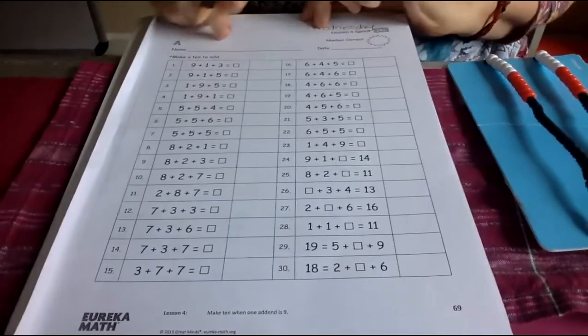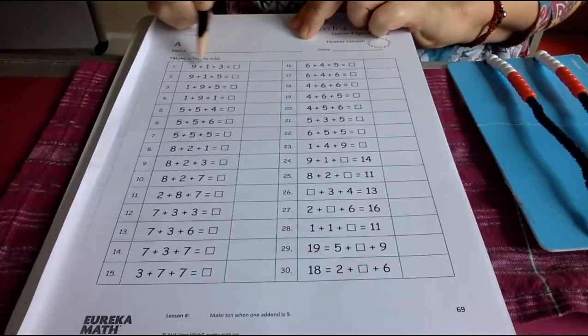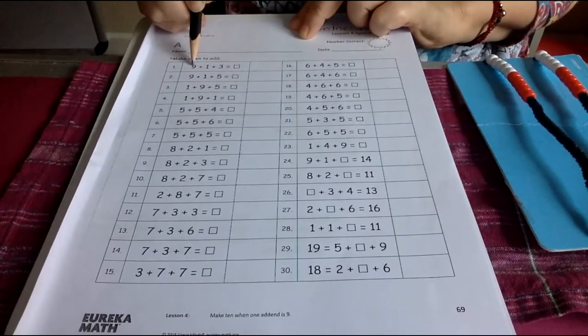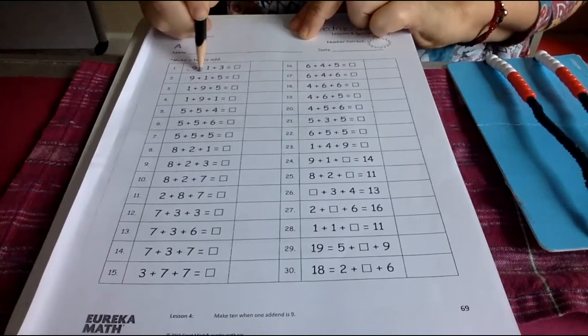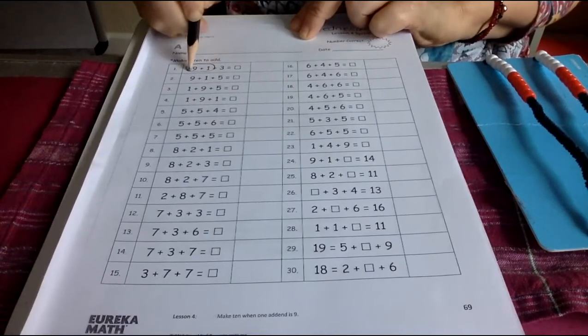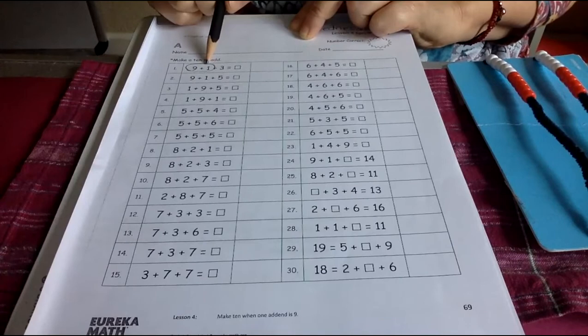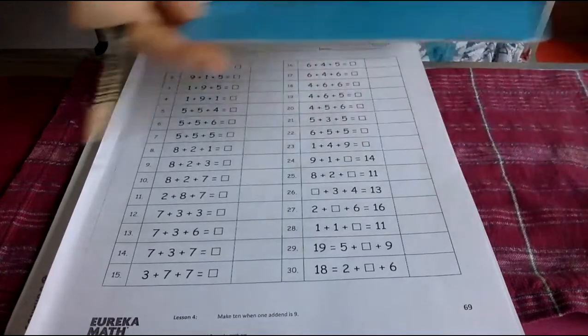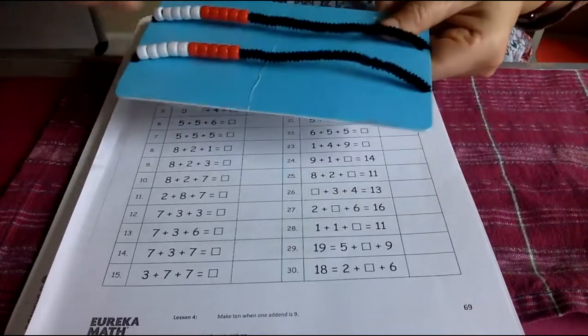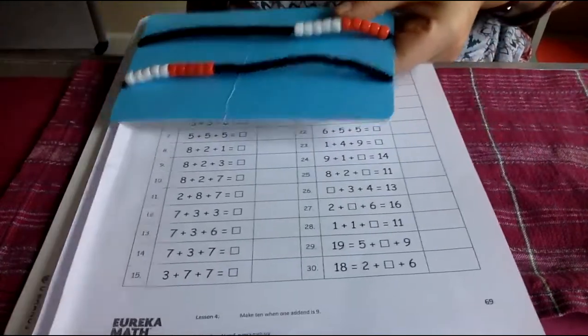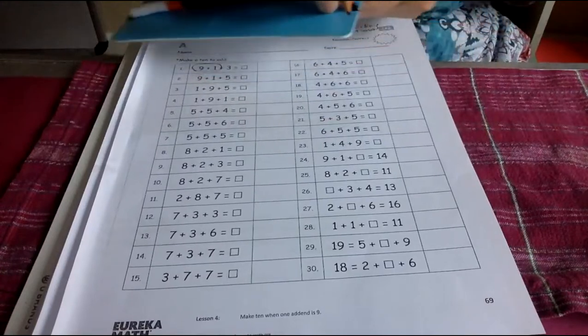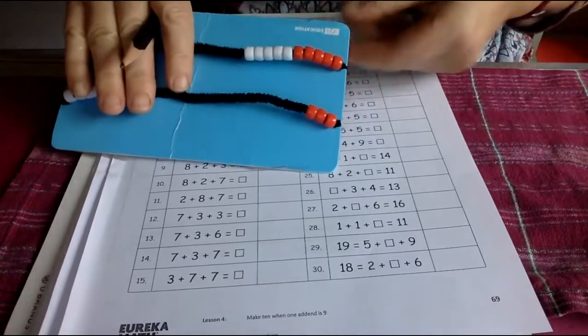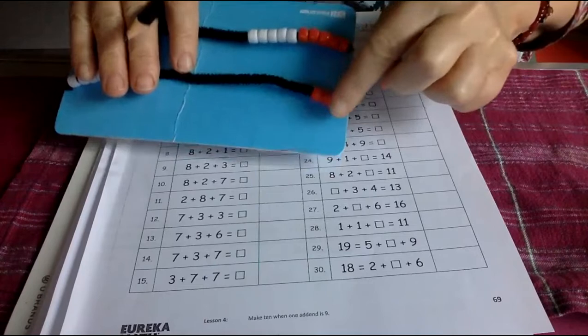So look at this. I've got to find a partner of 10. And that's what I'm going to look for. Oh, nine and one. I'm going to circle it. Nine and one make 10. Let's do this. And then I'm going to add three more. 10, 11, 12, 13.